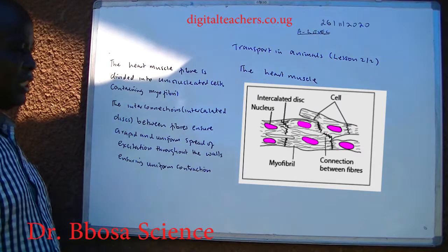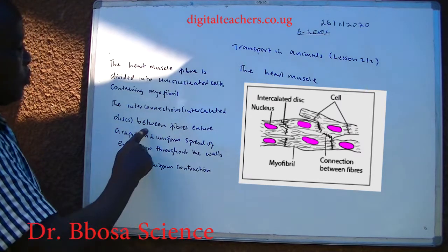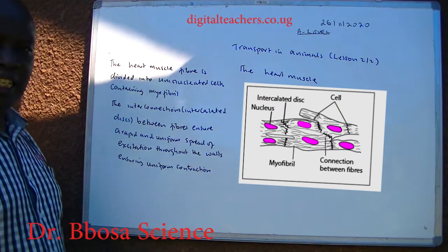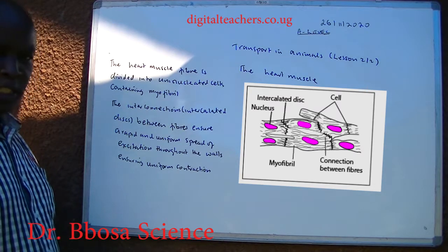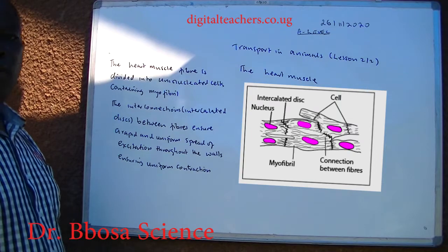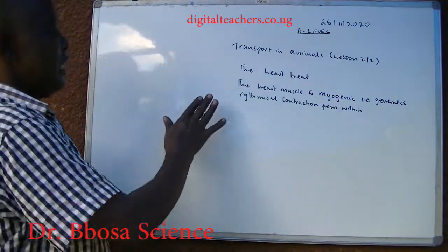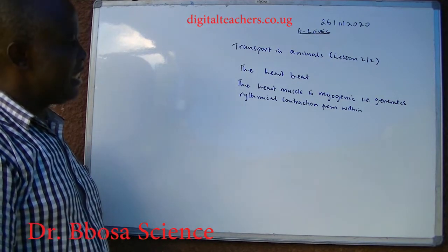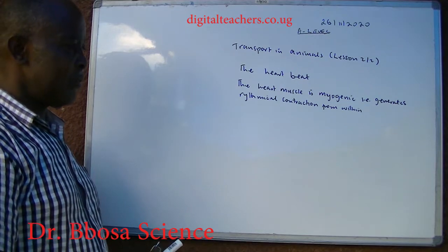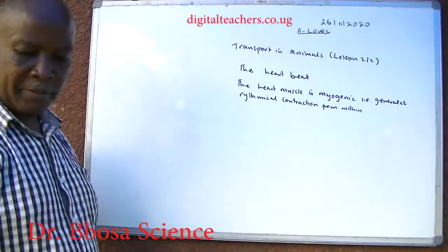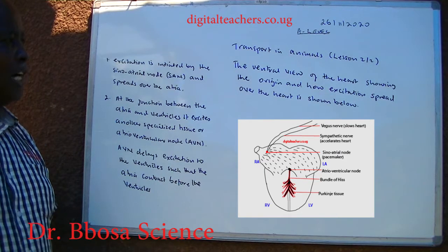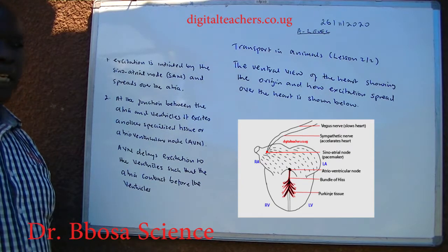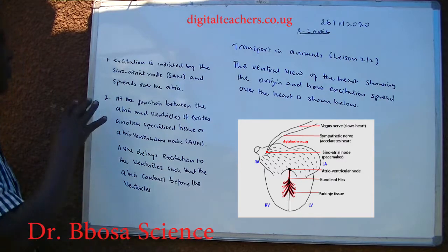The heart muscle fiber is divided into uninucleated cells containing myofibrils. The interconnections, or intercalated discs, between fibers ensure a rapid and uniform spread of excitation throughout the walls, ensuring uniform contraction. The heart muscle is myogenic — it generates rhythmical contraction from within.